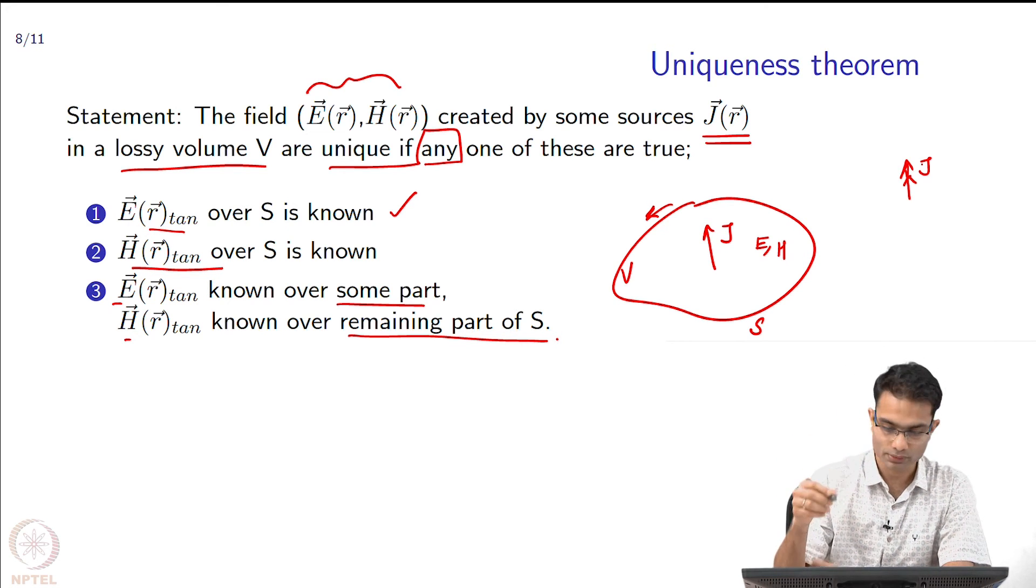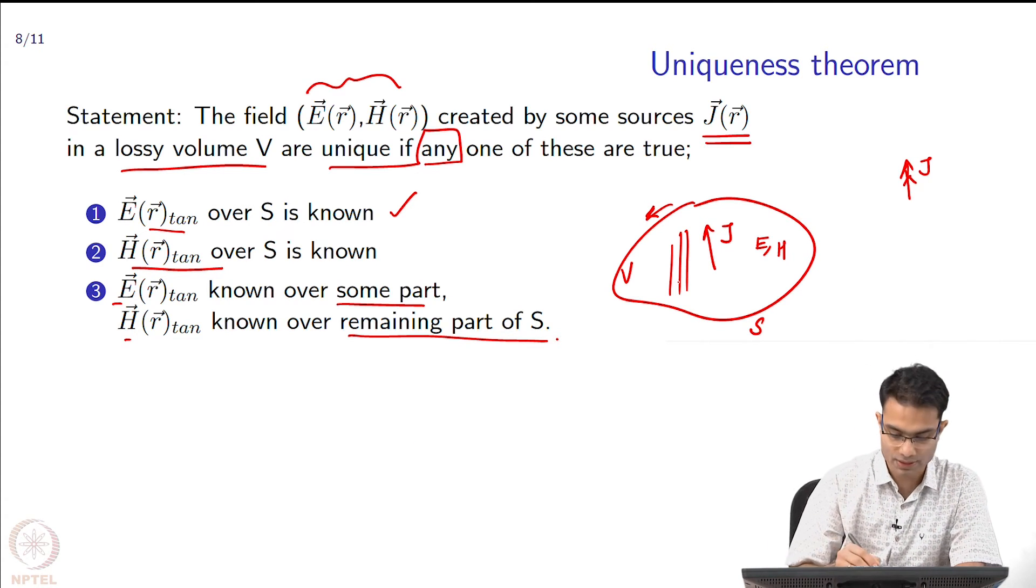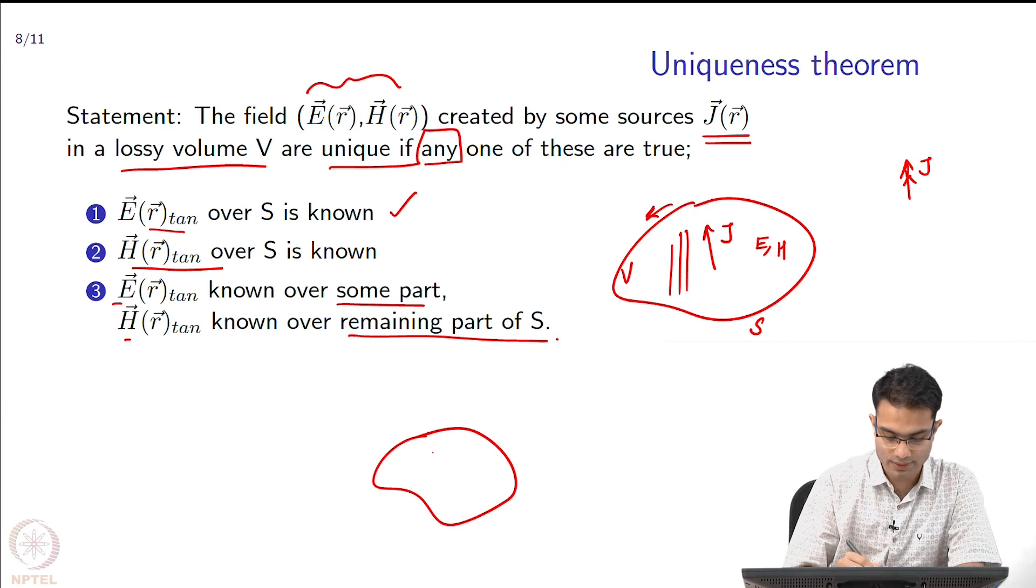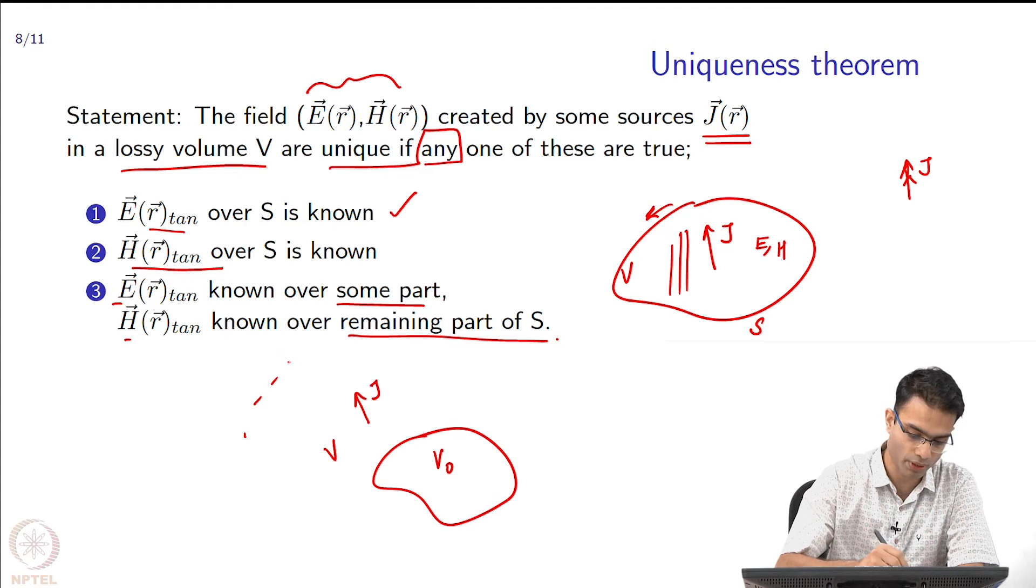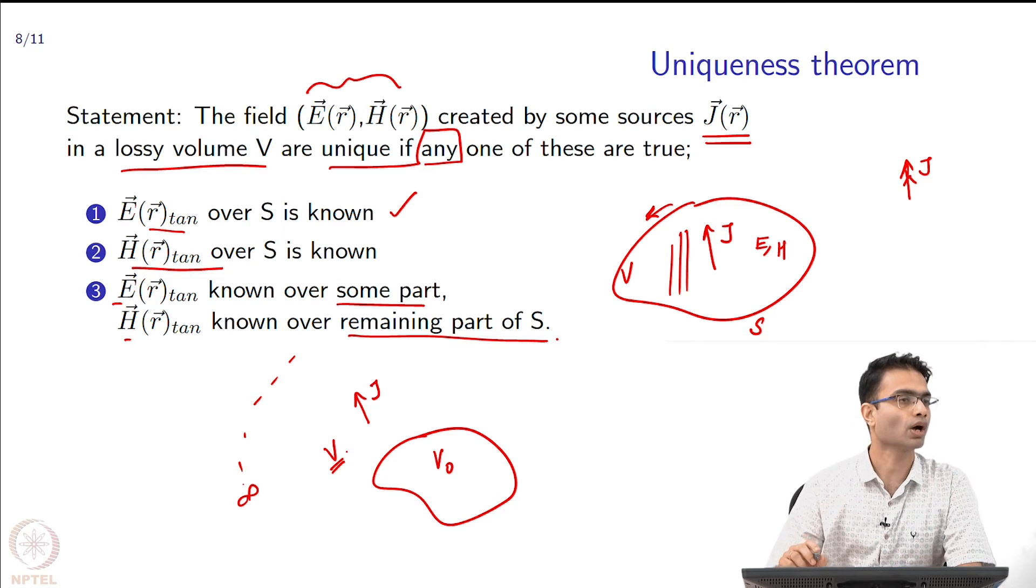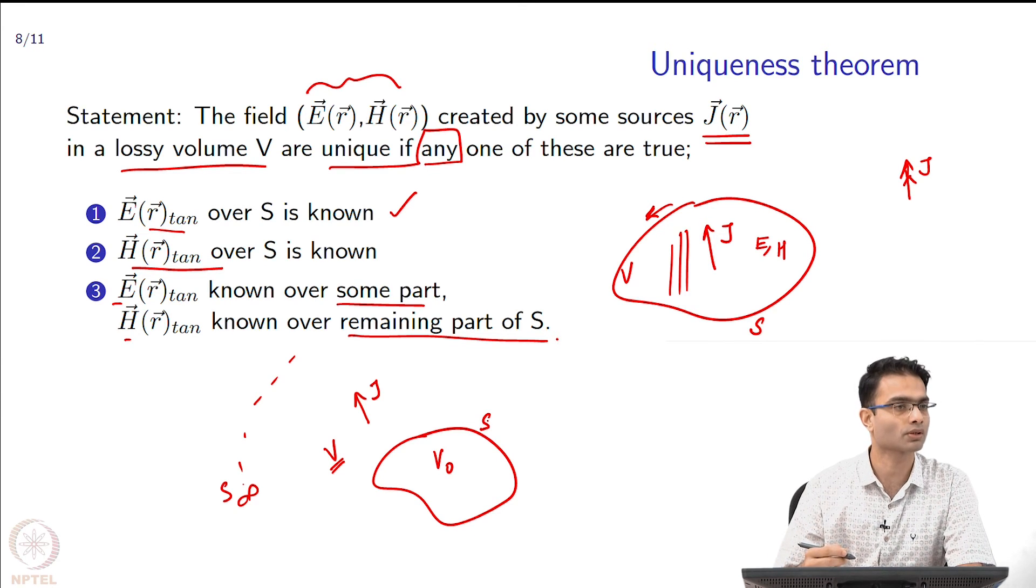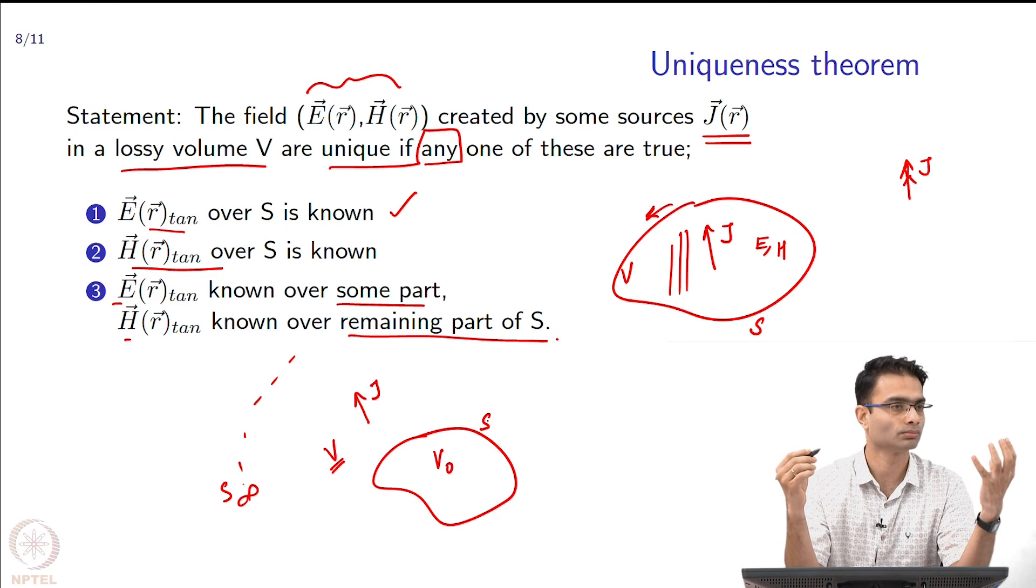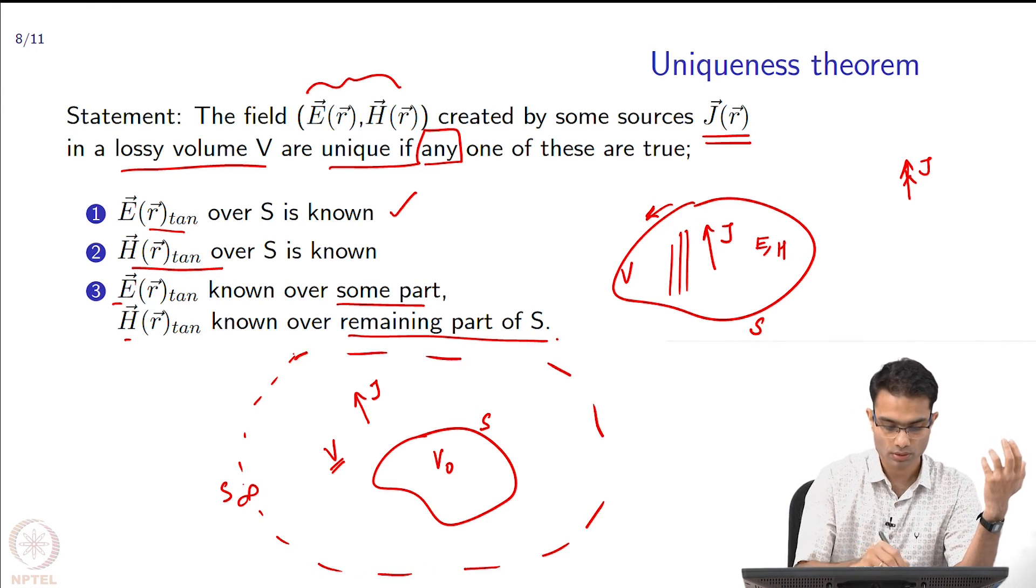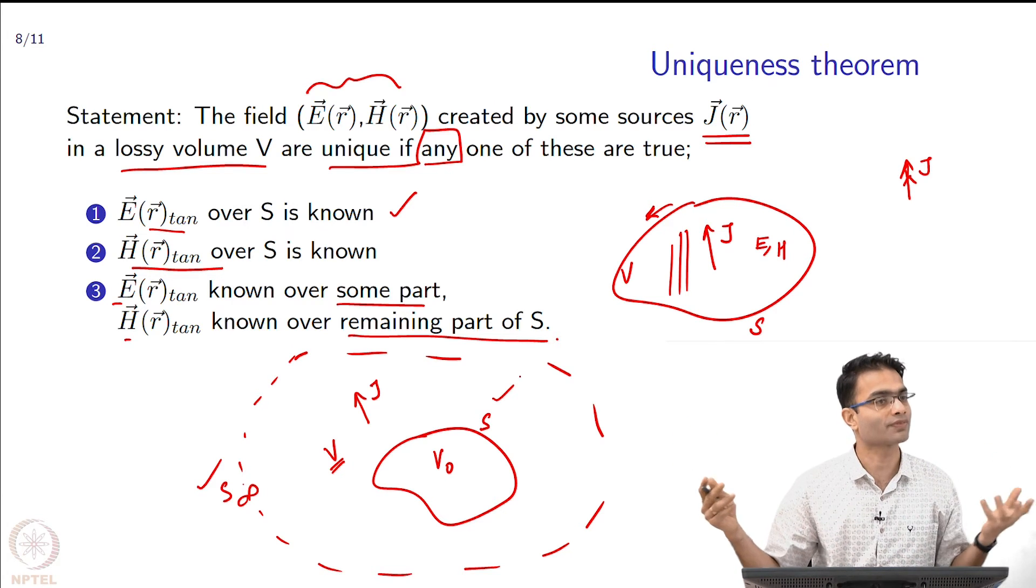Elaborating a little bit more on this example, this was an example of a closed volume. You may come across another different kind of volume which is like this. Let us say this is volume V naught and there is a current source over here J and this is volume V and there is no boundary over here, this boundary is infinity. And I am talking about region V. Now, what do I have to specify for the fields to be unique, on which surface? This is S infinity and this is S. This theorem holds here also, whatever surfaces are bounding the volume. For this volume V what are the surfaces? S infinity is one surface and S is the other surface. S infinity being infinitely far away, fields physically will go to 0.